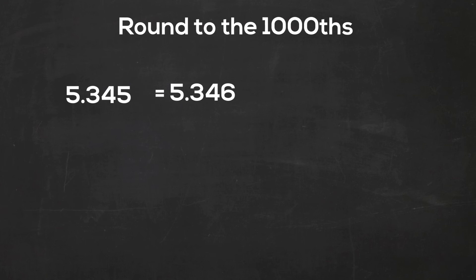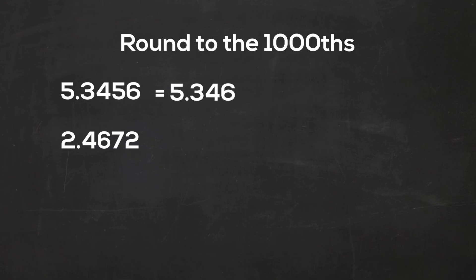How about 2.4672? Seven is the thousandths, so I'm going to draw a line right after that. Two is less than four, so I'm going to let it rest. It becomes 2.467 because the seven is going to rest and the two drops off.